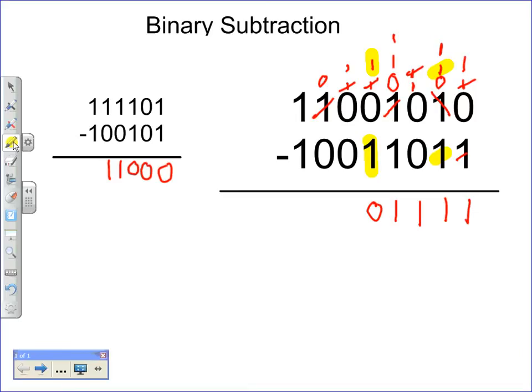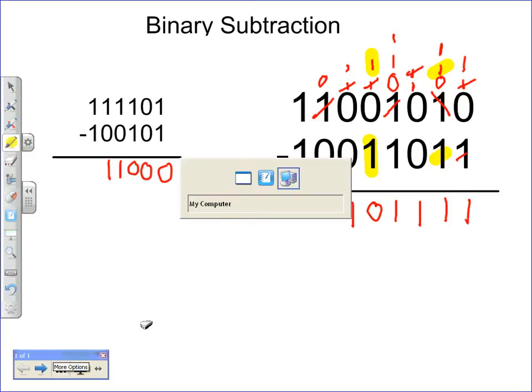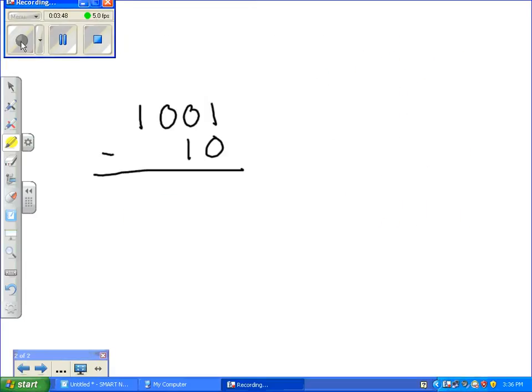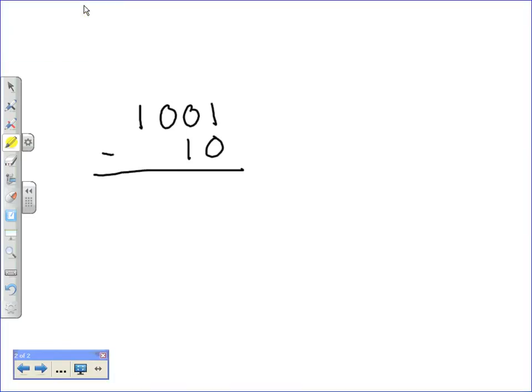Then we have a 1 minus 0. So we have a 1. A 0 minus 0 is 0. 1 minus 1 is 0. So we don't even really need those two 0s. And there's our answer.